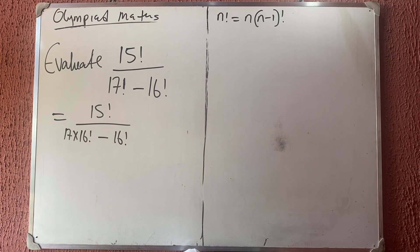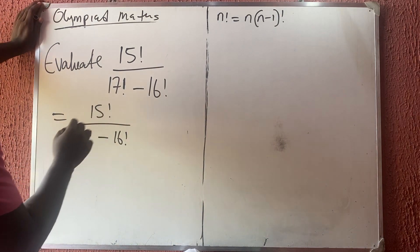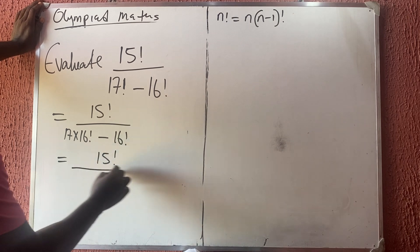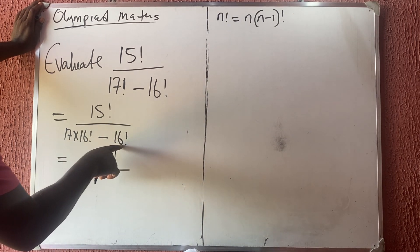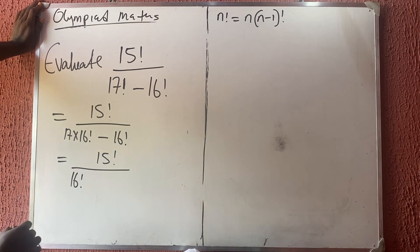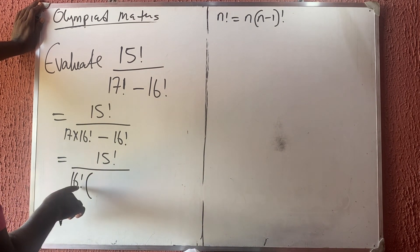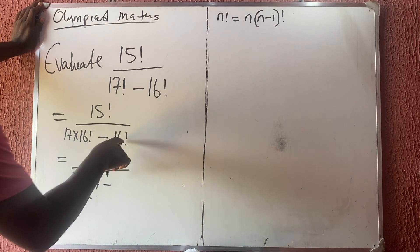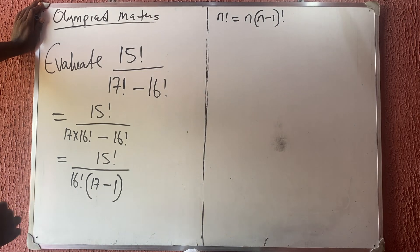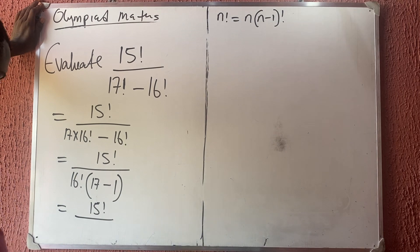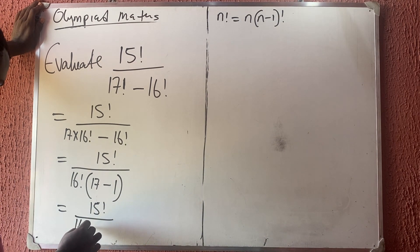Now if I factorize, you see that these terms have something in common. This is 15 factorial all over — you cannot say this minus this to give you zero; they have something in common. So you bring out 16 factorial: in the bracket, when 17 times 16 factorial divides, I'm left with 17 here, minus when 16 factorial divides itself I'm left with 1. So this is simply 15 factorial all over 16 factorial times (17 minus 1).